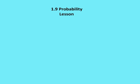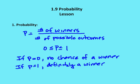What is probability? Probability is just a fraction that is between 0 and 1. So it's the number of winners over the number of possible outcomes.